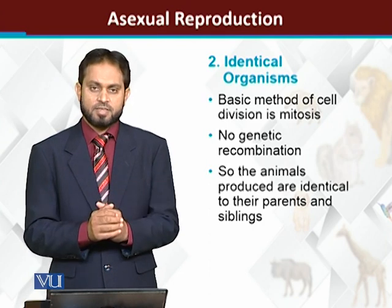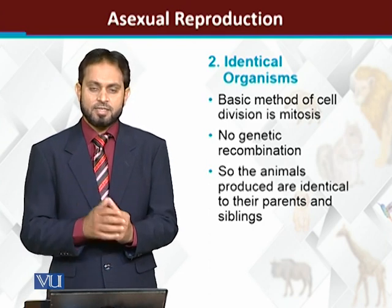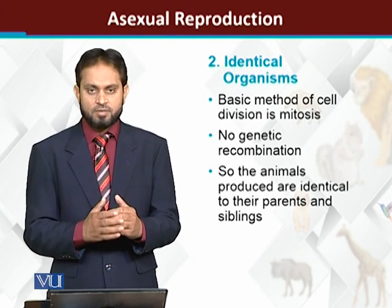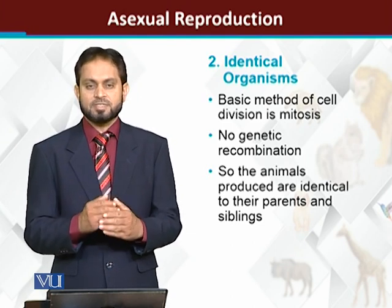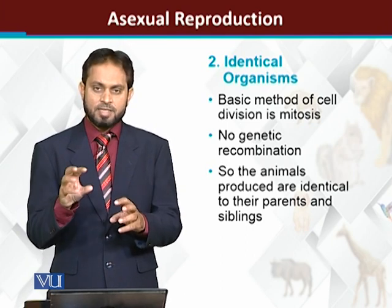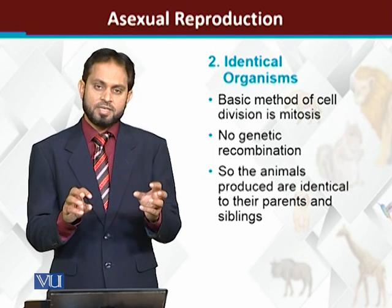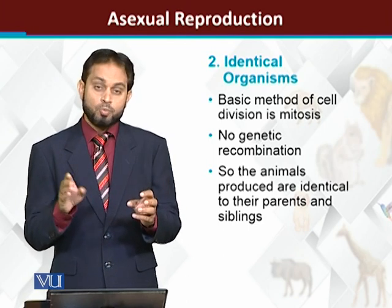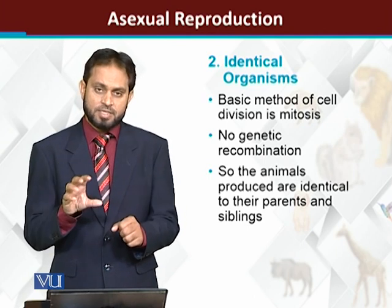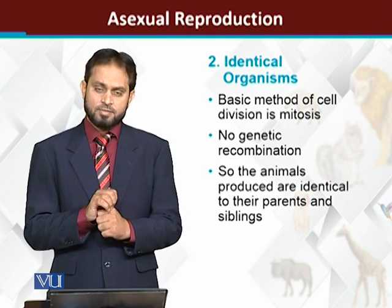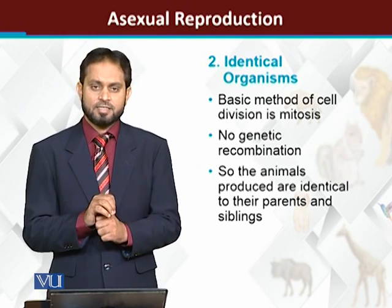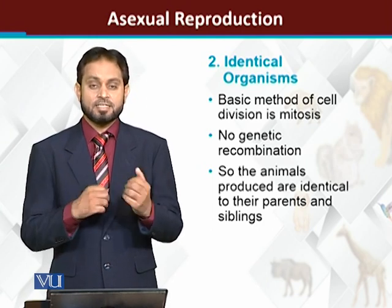Cell division has two methods: meiosis and mitosis. In asexual reproduction, basically mitosis is involved. In mitosis, the cells produced are identical. This means that when an organism reproduces through asexual reproduction, the young one is produced through mitosis — so the young one will be identical to its parent.